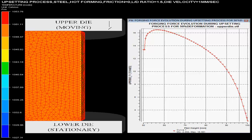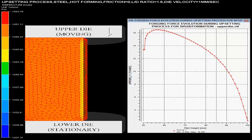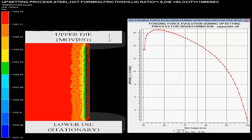The video shows the upsetting operation taking place using a mechanical press. The initial billet of steel having an L by D ratio equal to 1.5 is taken hot.